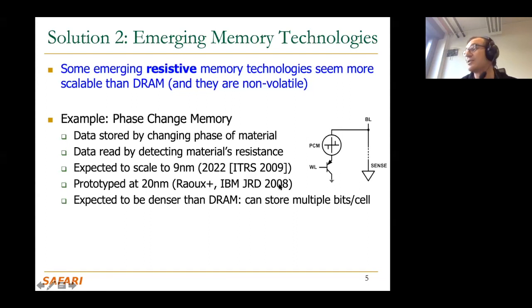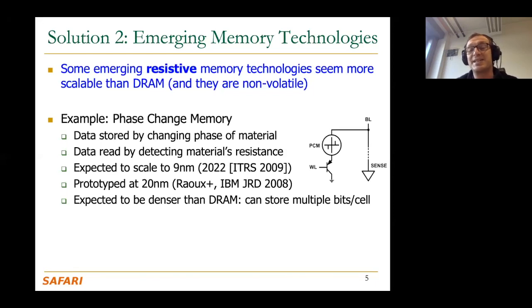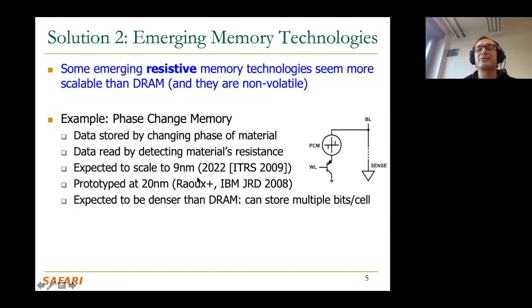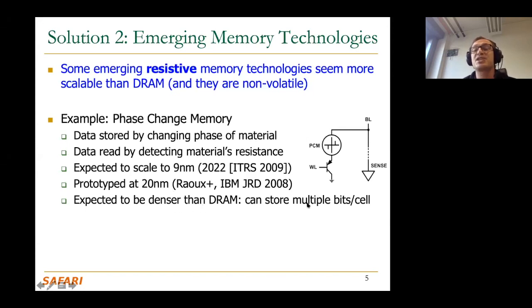IBM prototyped phase change memory as early as 2008 at 20 nanometers — DRAM only reached 20-nanometer feature size just a few years ago. That's very promising. A big advantage of PCM is it's expected to be denser than DRAM because it's more scalable. Additionally, you can store multiple bits in a given PCM cell because the resistance range is very large — orders of magnitude difference between the lowest and highest resistance.